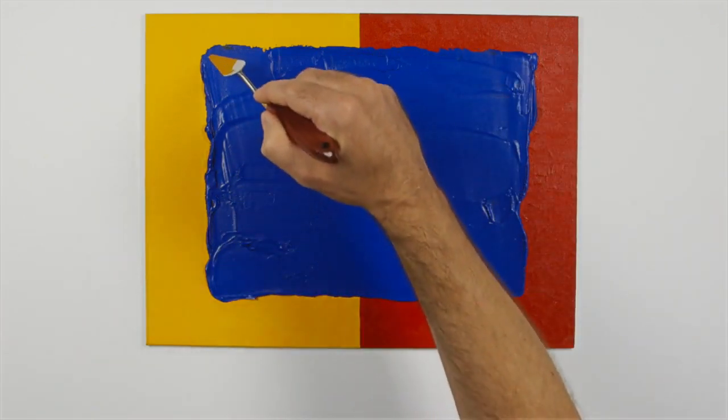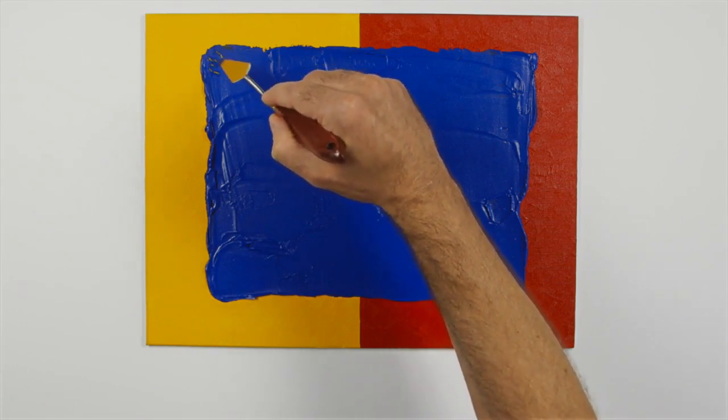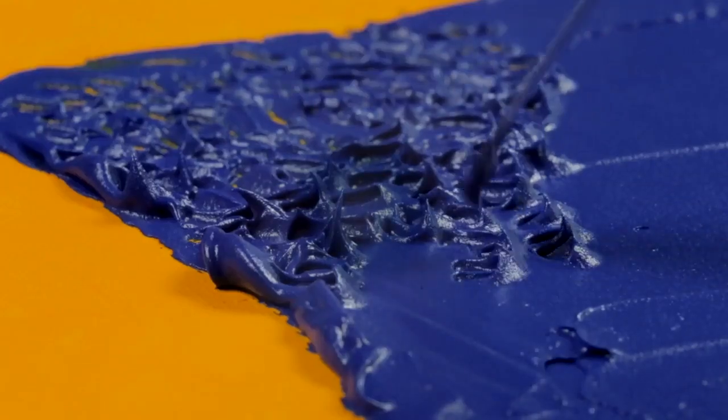Now, while that's still wet, use the end and edges of a palette knife to scratch through the color to reveal the lighter colors underneath.